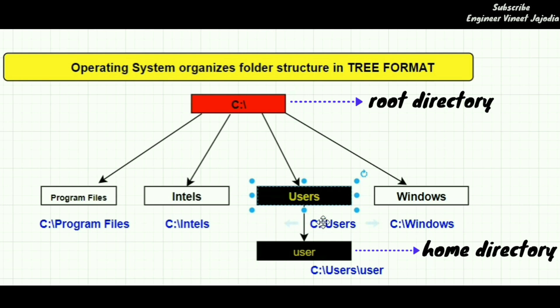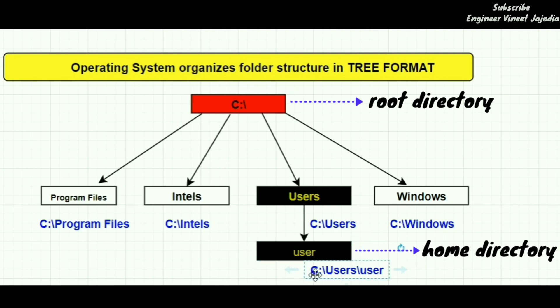As you can see, inside the Users directory there is one more user directory. So if you want to reach this directory, you have to add one more level by writing backslash user. So you will reach this directory, and the absolute path for this directory is C:\Users\user. This is what the absolute path is — it is based upon the root directory.